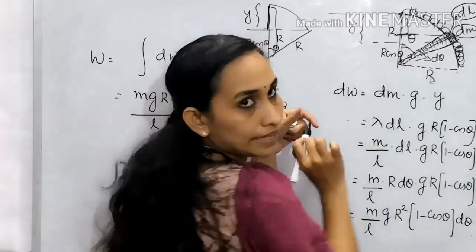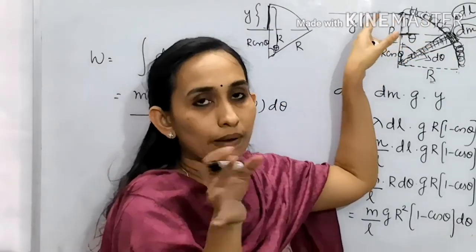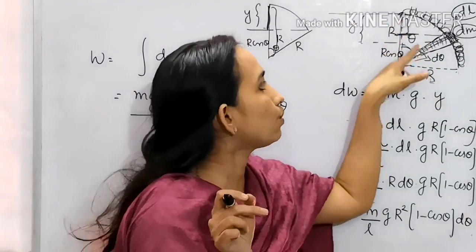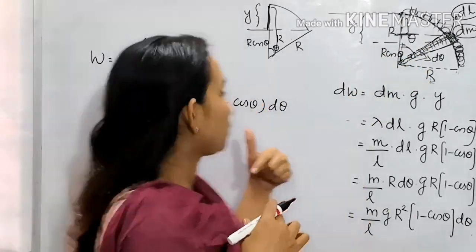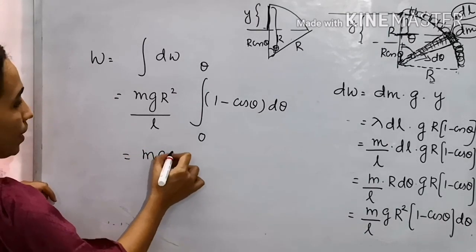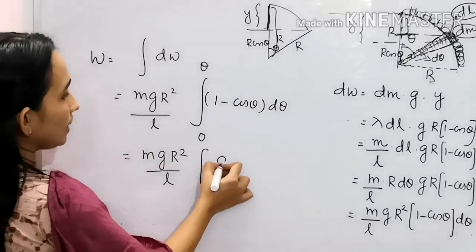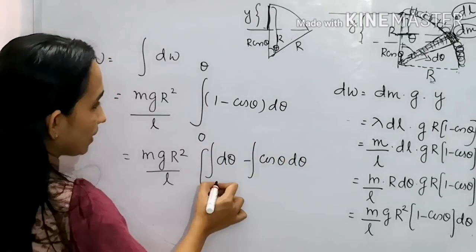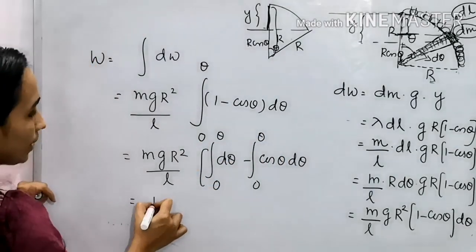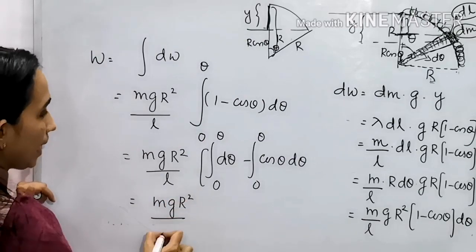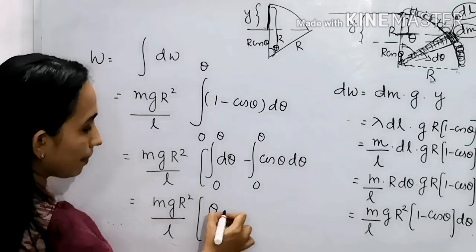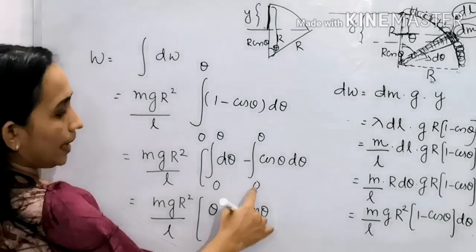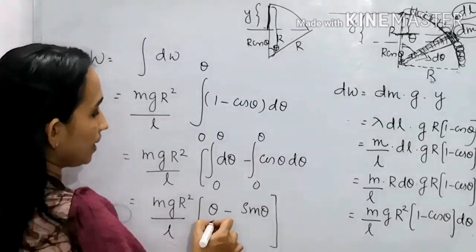We integrate from 0 to π/2 because it is already given that the chain length is less than πr/2, so the total angle subtended is up to π/2. Therefore W = (mg·r²/l) · ∫₀^{π/2} (1 − cosθ)dθ = (mg·r²/l) · [θ − sinθ] evaluated from 0 to π/2.